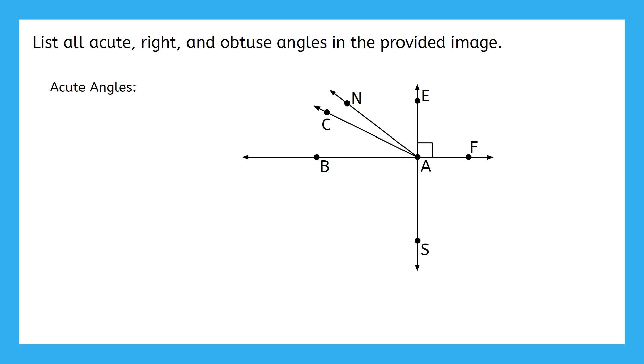Acute angles are less than 90 degrees, and since angle BAE is a right angle, any of the angles contained within it would have to be smaller than 90 degrees. That means angle BAC is acute, angle BAN is acute, angle CAN is acute,